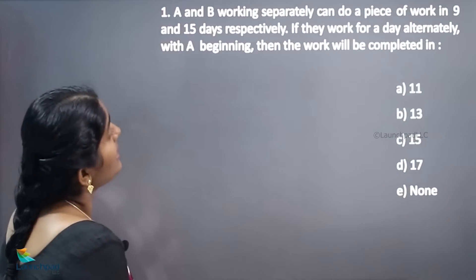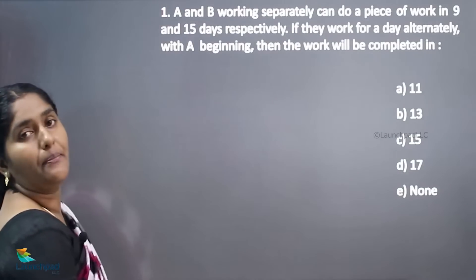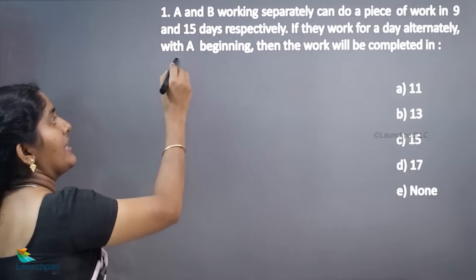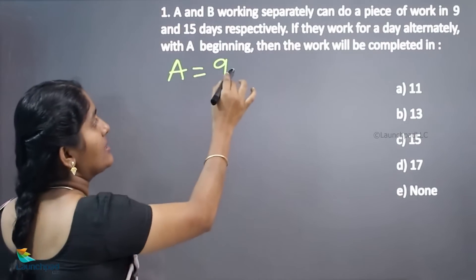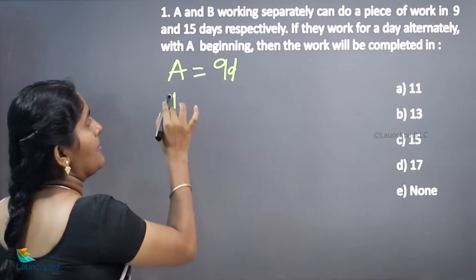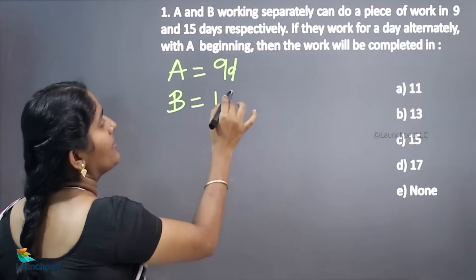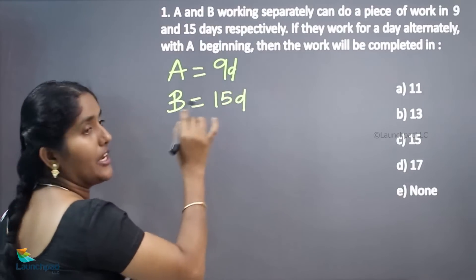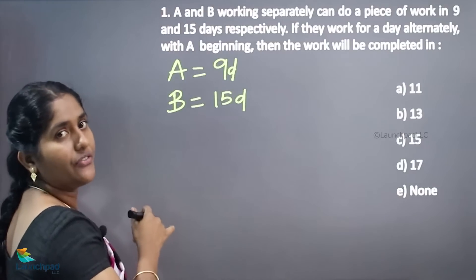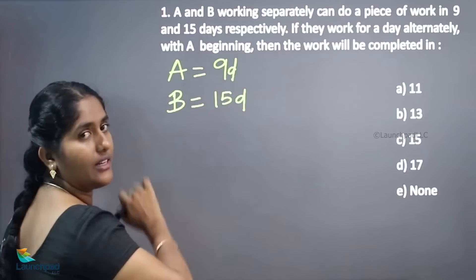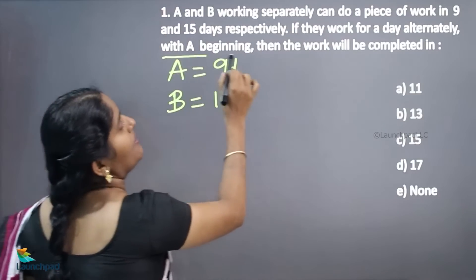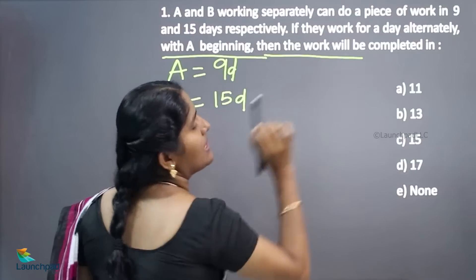Now your question is A and B working separately. Separately means A can do the job in 9 days, and B can complete the work in 15 days. If they work alternately with A beginning, then the work will be completed in...